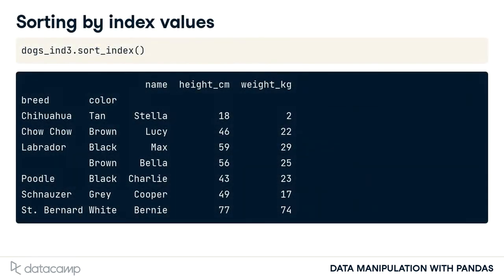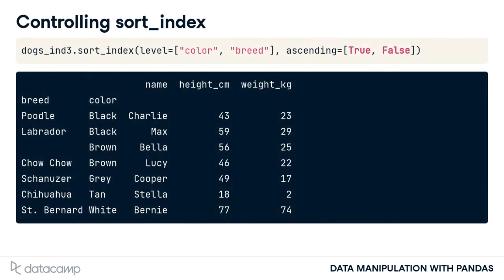In Chapter 1, you saw how to sort the rows of a dataframe using sort_values. You can also sort by index values using sortIndex. By default, it sorts all index levels from outer to inner in ascending order. You can control the sorting by passing lists to the level and ascending arguments.